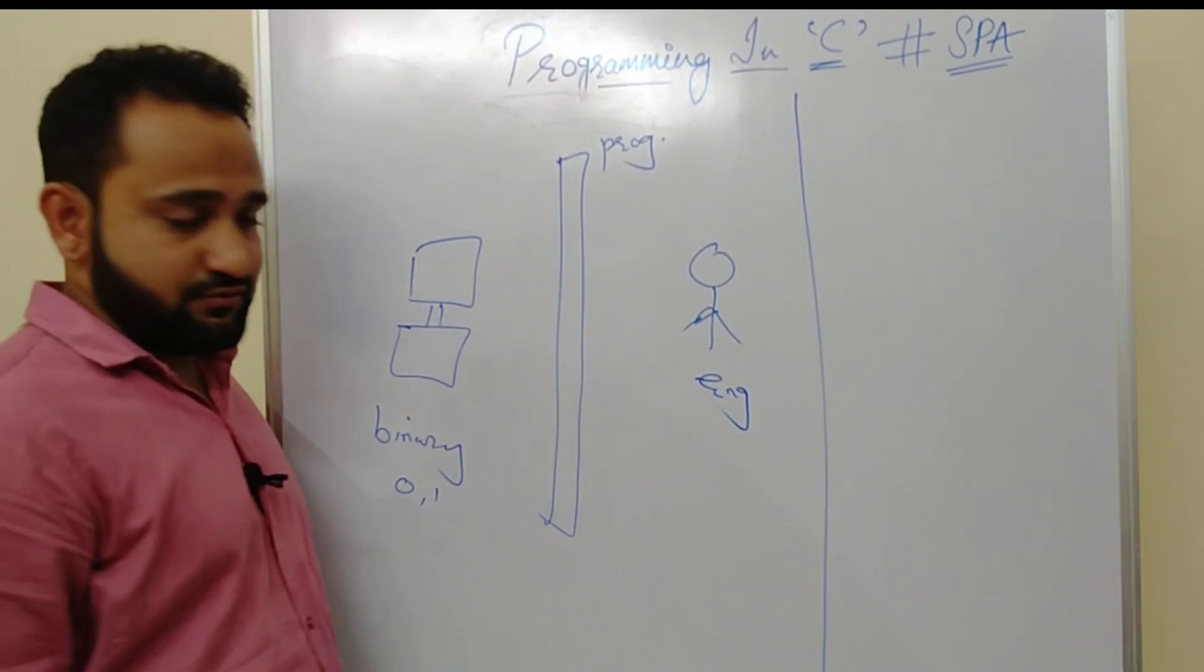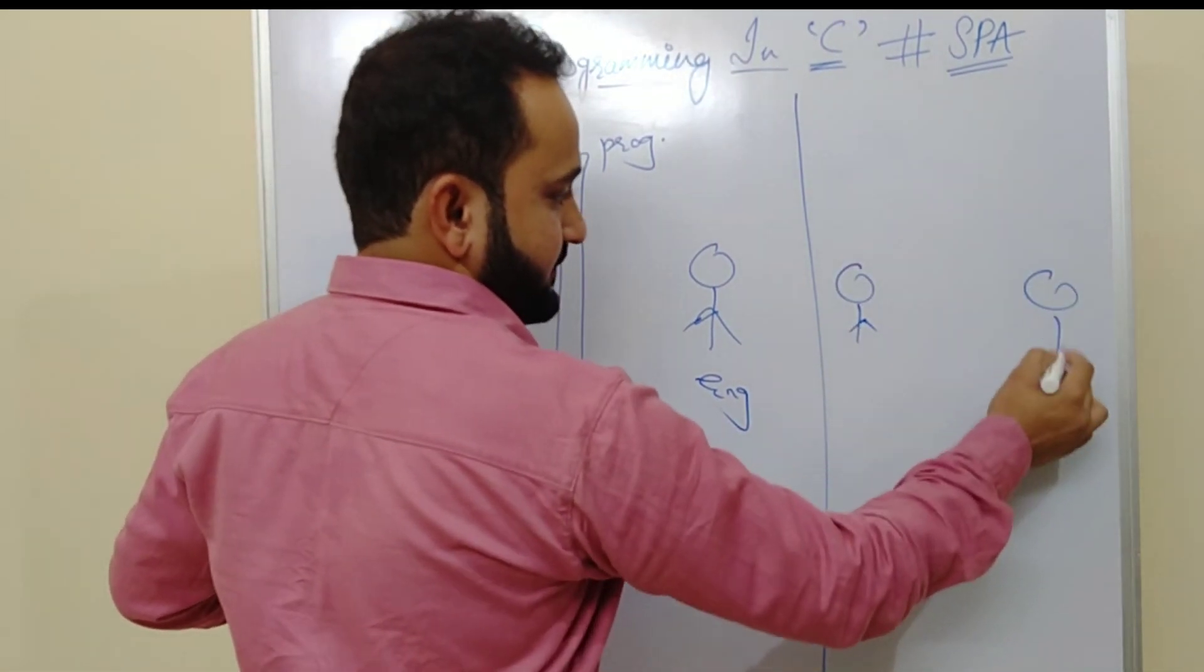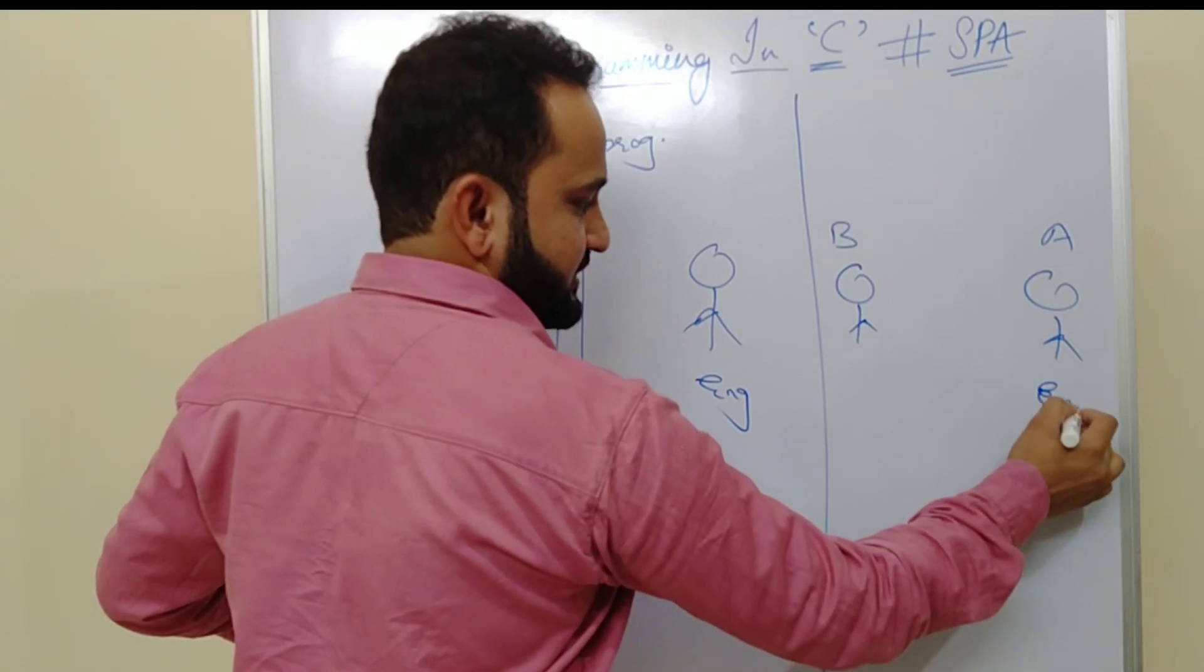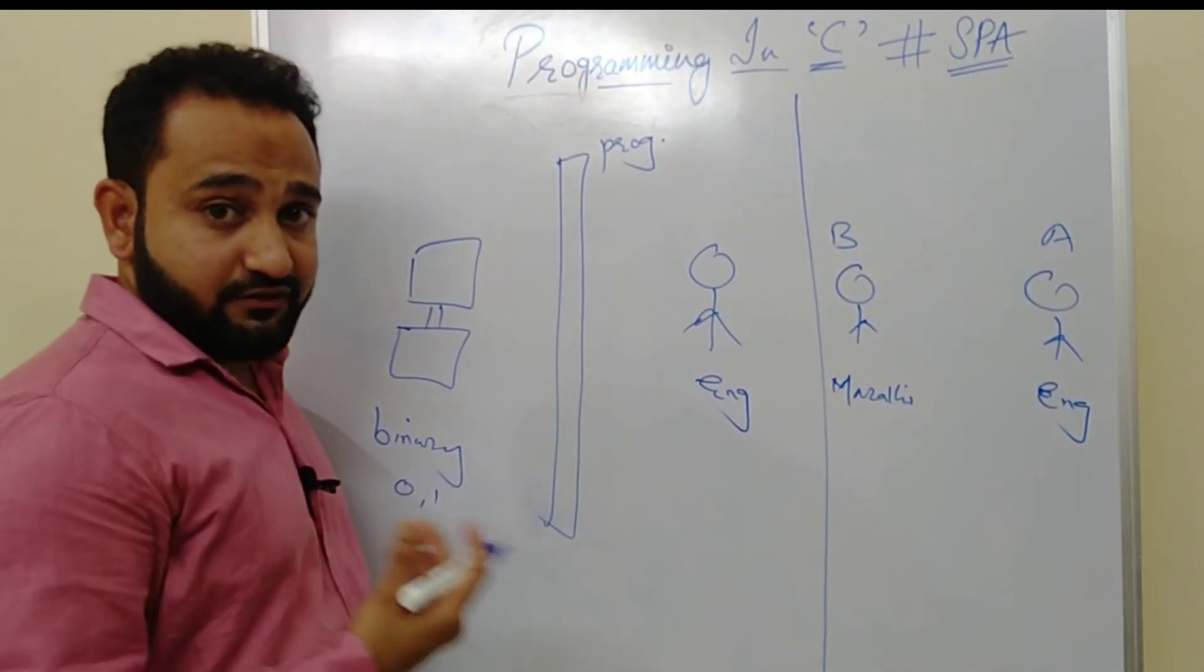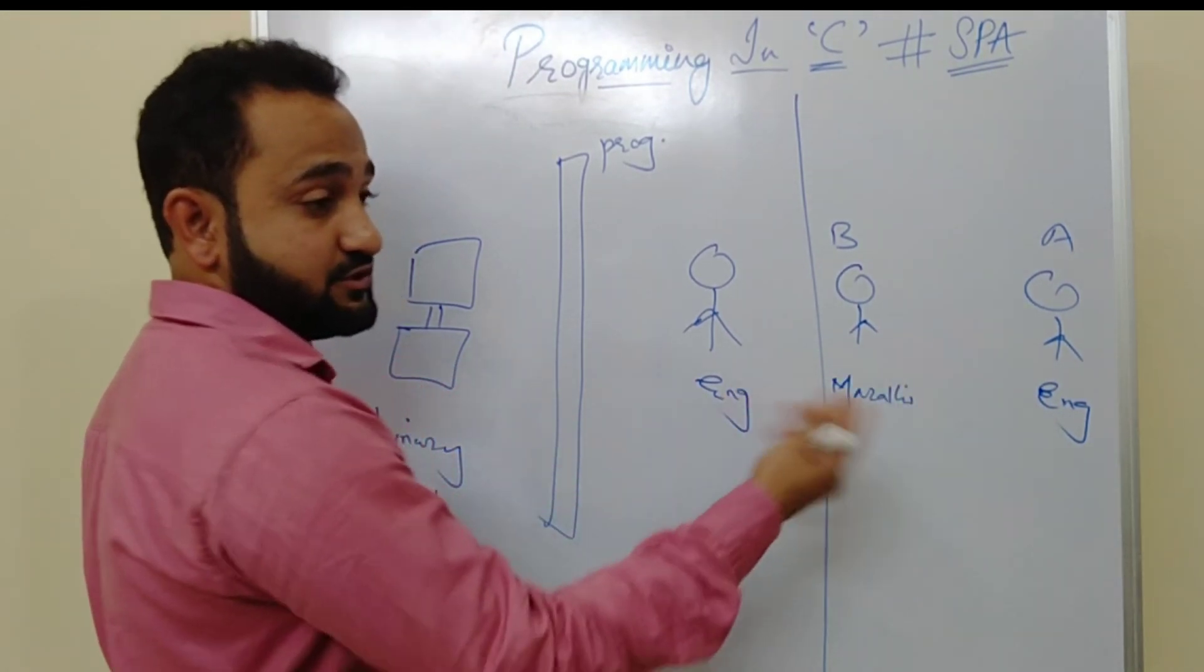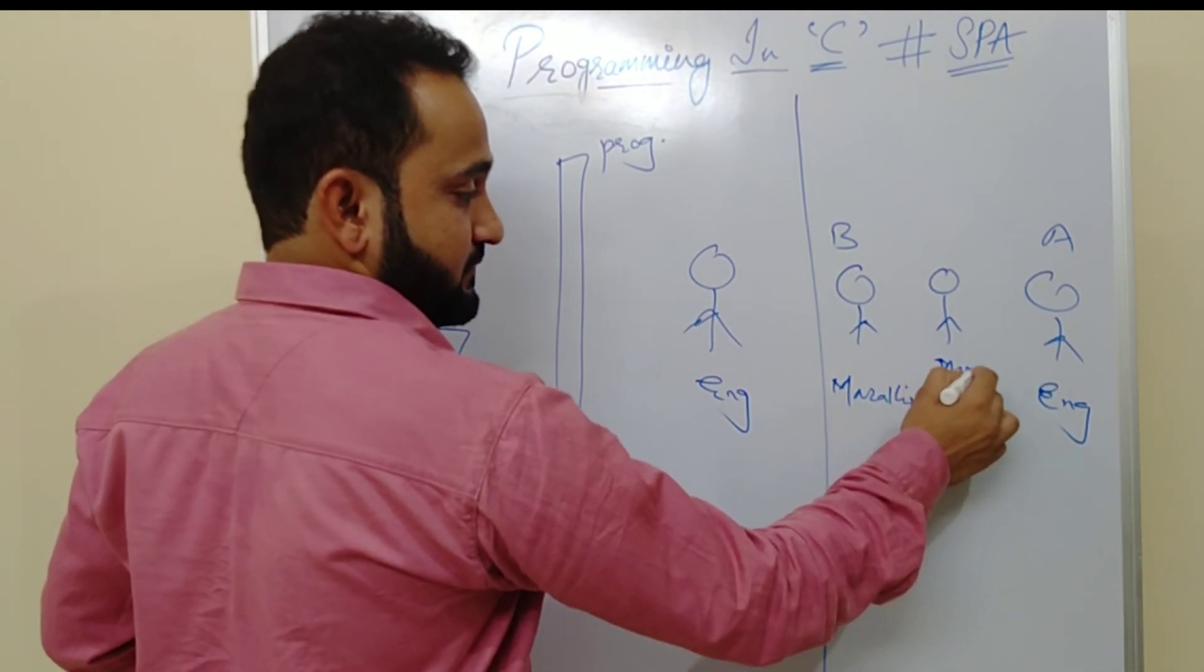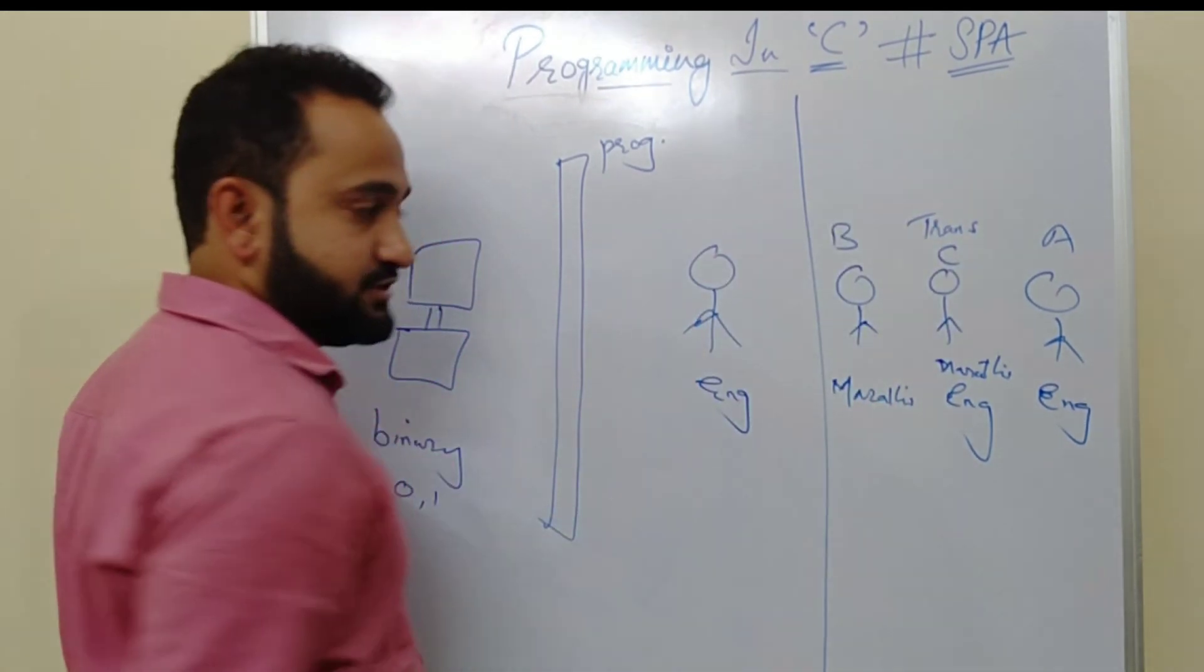Let's see one more example, a real time example, so as to understand what's exactly the need of programming. For example, if I have a person here and a second person, for example, this is my person A and this is my person B. They want to communicate with each other. The condition is your A just knows English language and your B just knows Marathi language. They want to communicate with each other.